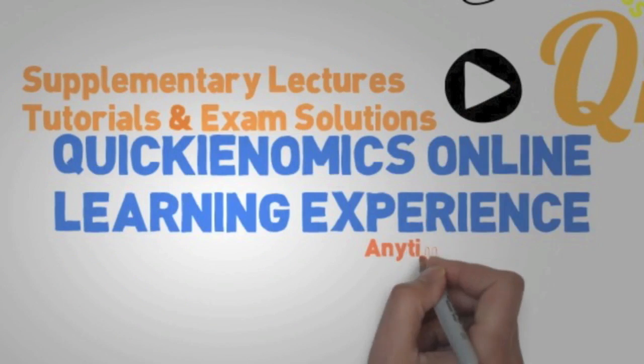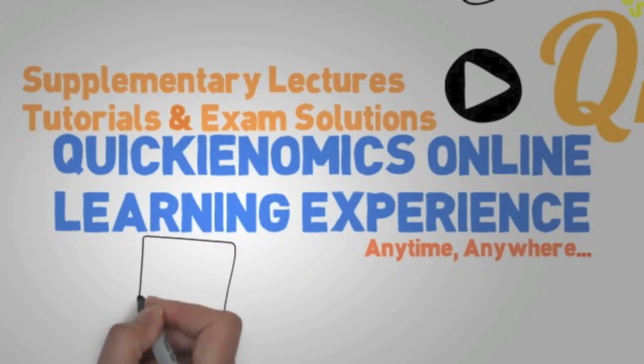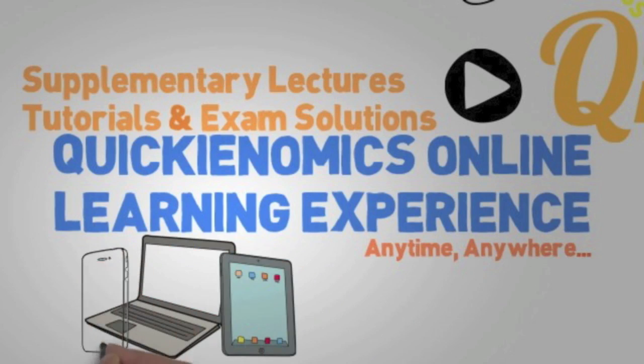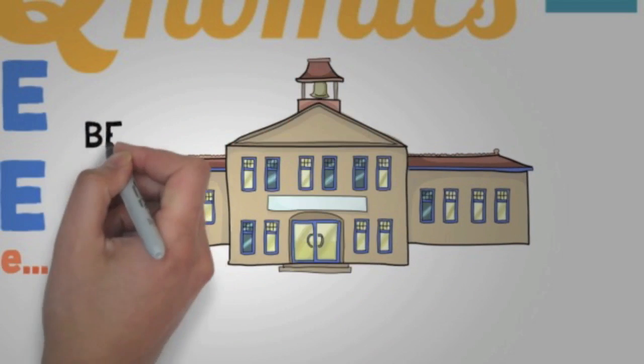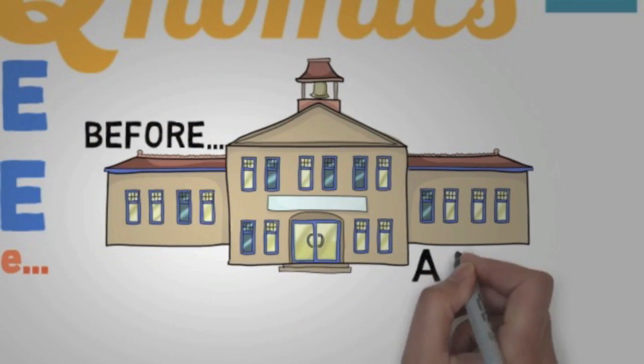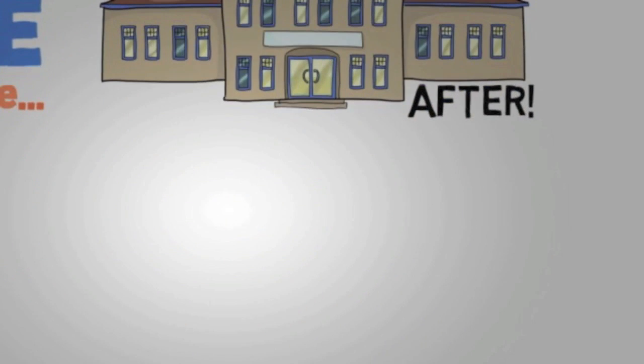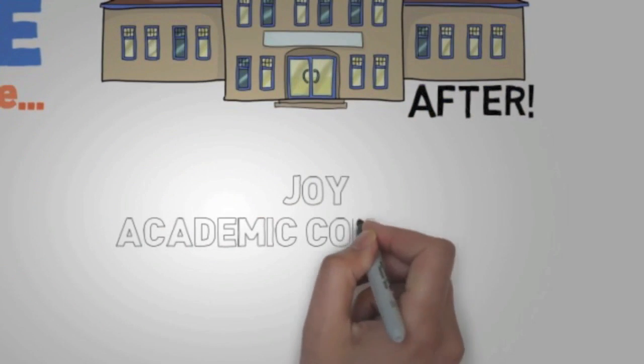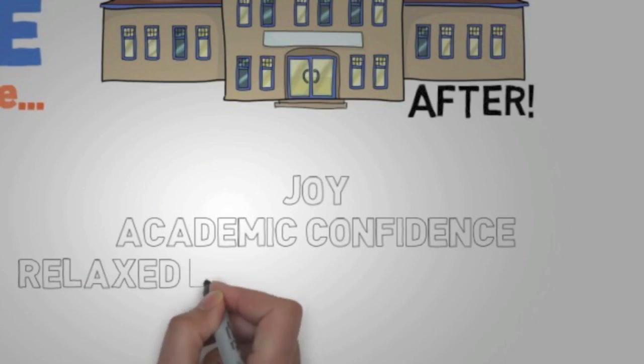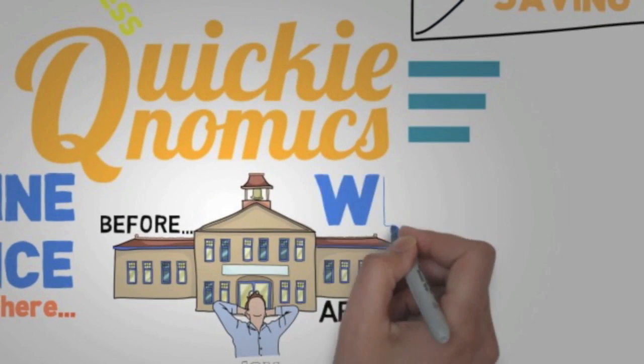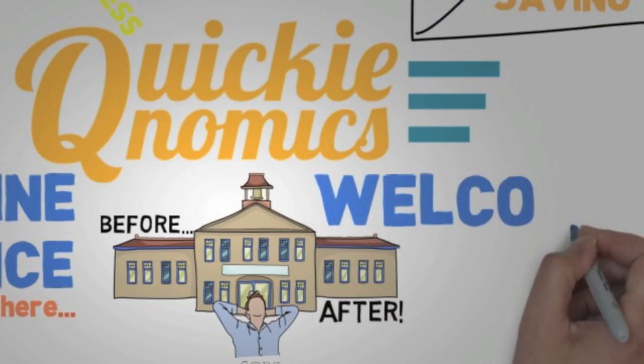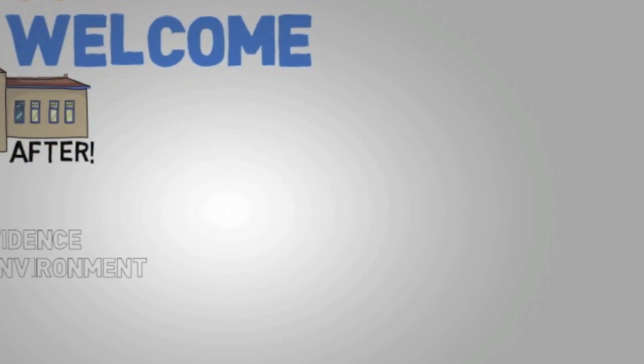The Quickenomics online learning experience is a range of supplementary lectures, tutorials, and exam solutions in the form of videos which you can conveniently view anytime, anywhere. Watching our videos before and after your regular lessons at school, we aim to give you joy in learning and build academic confidence at the comfort of your own relaxed learning environment. So how can you begin? We welcome you to purchase Quickie dollars to redeem the videos for full access to the Quickenomics online learning experience. Thank you for starting with Quickenomics.